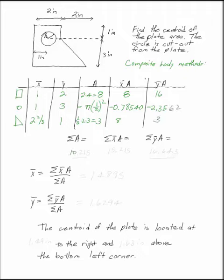So the sum of the A's, add up that column, you get 10.215. Sum of the x-bar A's is 15.215. Sum of the y-bar A's is 16.643, bearing in mind that that area is negative for the circle.